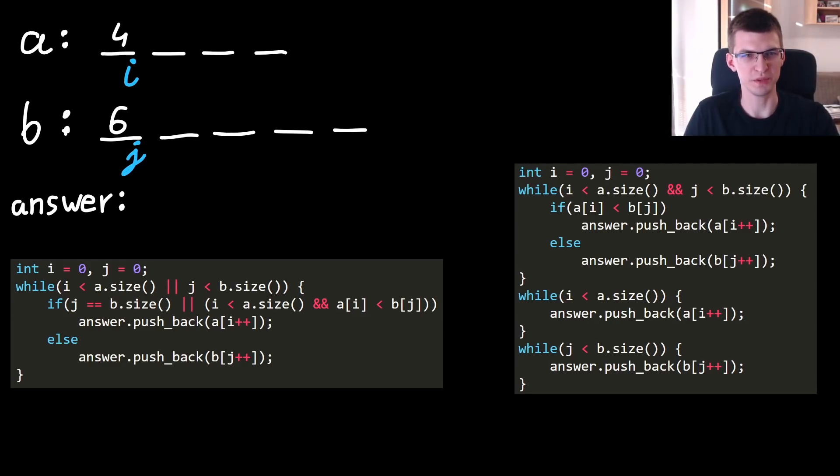I want to every time compare those two values and move i or j by 1 to the right. If a[i] is smaller than b[j], then move i to i plus 1 and this 4 appends to the combined array.